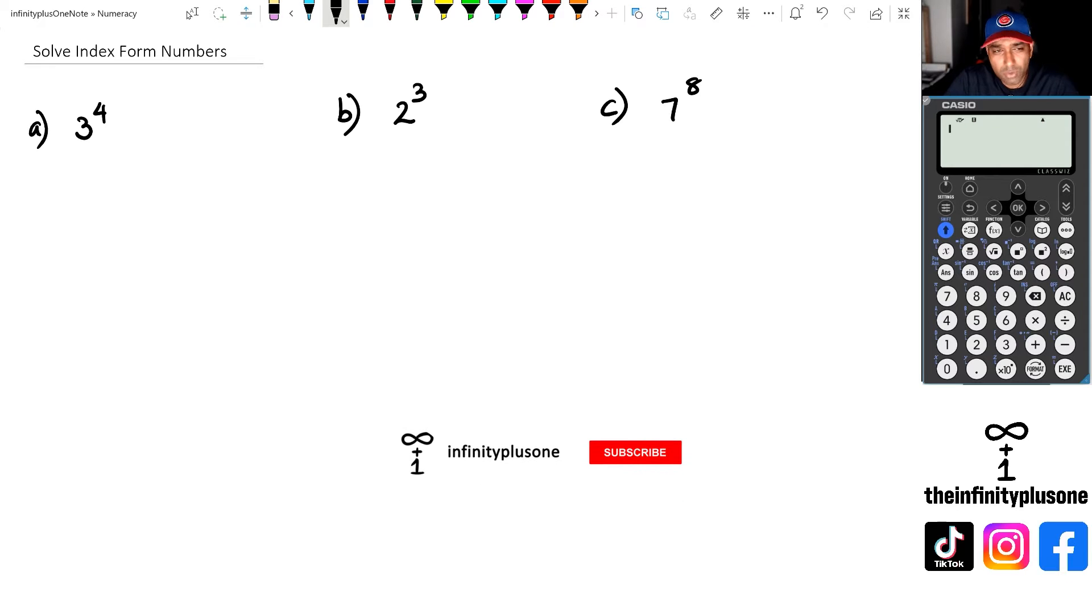Okay, so one of the common mistakes that I see people doing when I see these types of questions is that they see 3 to the power of 4 and I don't know why but they automatically go 3 times 4 and then they write the answer as 12. Now remember, this is actually 3 to the power of 4. This is not 3 times 4. If they wanted you to calculate 3 times 4, they would actually put it like this, 3 times 4. But in this case, it is actually 3 to the power of 4.